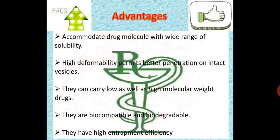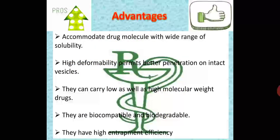The advantages: transferosomes accommodate drug molecules with a wide range of solubility — solubility is a main issue in BCS classification across the four classes of the biopharmaceutical classification system. High deformability permits better penetration of intact vesicles. They carry both low and high molecular weight drugs, which is a very good advantage since not every drug delivery system can carry both. They are biocompatible and biodegradable, not harming the environment, and have high entrapment efficiency.